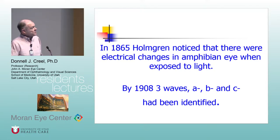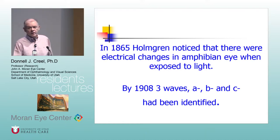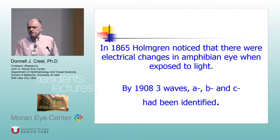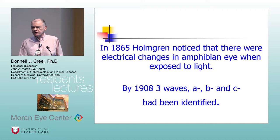So by the middle of the 19th century — by 1908 — they knew that there were three waves: the A, B, and C waves that made up the electroretinogram.